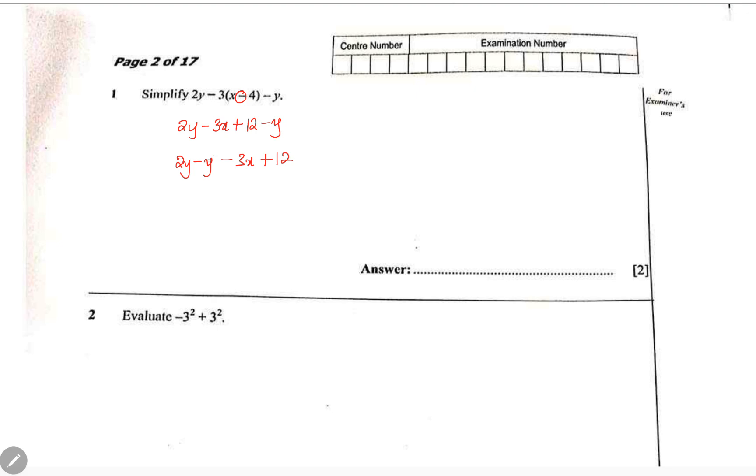Then look at this, you've got two y's and one y, so from two y's you are removing one y - how many y's do you remain with? One. Minus 3x plus 12. Come here and report the final answer and just like that you're good to go.